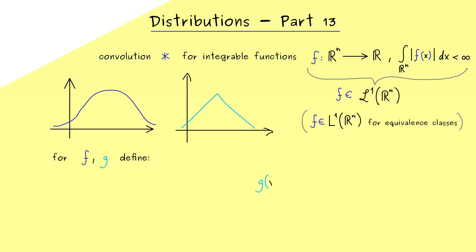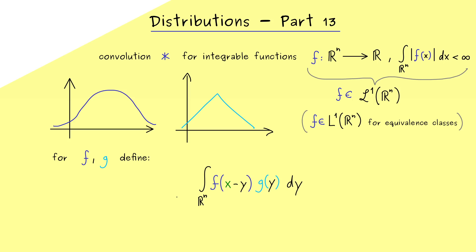We take the function g of the point y and multiply with the function f. However, we actually want to mirror this function, so we put in minus y. And since we want to move the graph of f, we put in x minus y. We want to do that for every point x in R^n, and then for a fixed x we integrate this whole thing with respect to y — so we have dy here. If this integral exists, we have a value for our new function, and this is what we call the convolution f star g, more precisely evaluated at the point x.